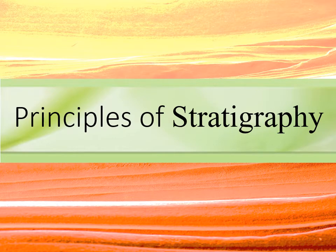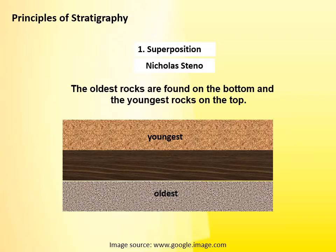Now coming to the principles of stratigraphy — the stratigraphic principles based on which we draw lithologs or lithocolumns. First is the Law of Superposition, proposed by Nicholas Steno. According to him, if the rock layers are undisturbed, then older layers are found at the bottom in a sequence of rock layers and successive younger layers occur over them — that is, in a sequence of rocks, older layers are found at the bottom and more and more younger layers are found at the top.